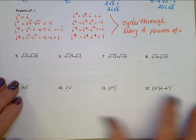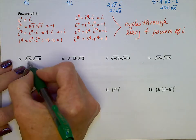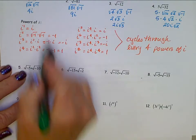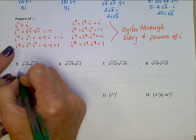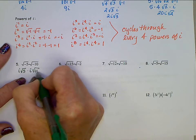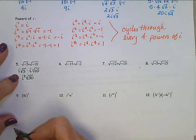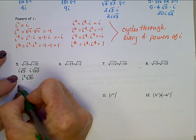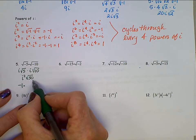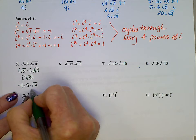Let's simplify some problems. For the square root of negative 5 times the square root of negative 10: we pull out each negative as an i, giving us i times square root 5, times i times square root 10. That gives us i squared times the square root of 50. i squared is negative 1. Square root of 50 is square root of 25 times 2 — that's 5 times square root 2. So we end up with negative 5 square root 2.